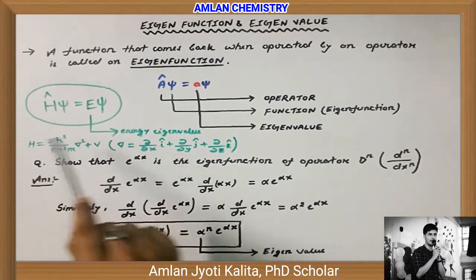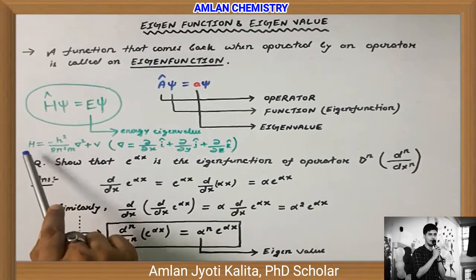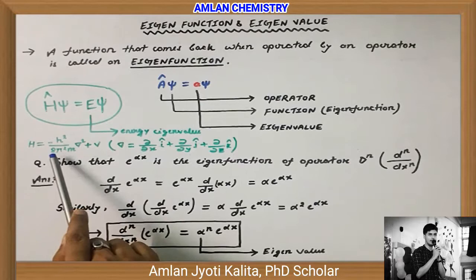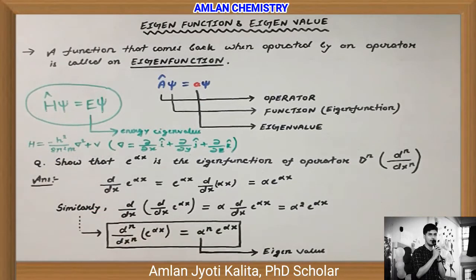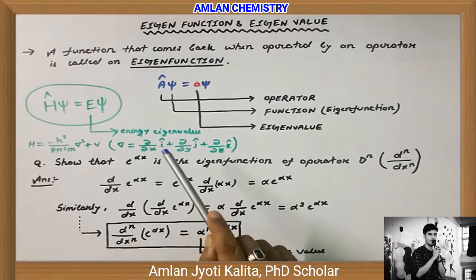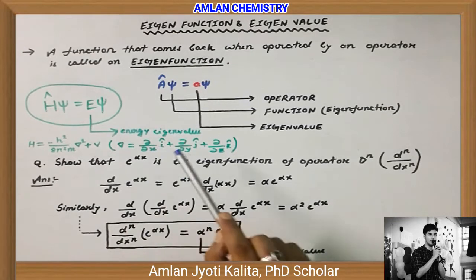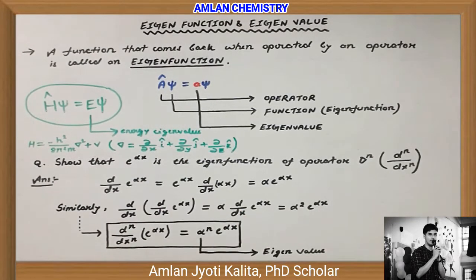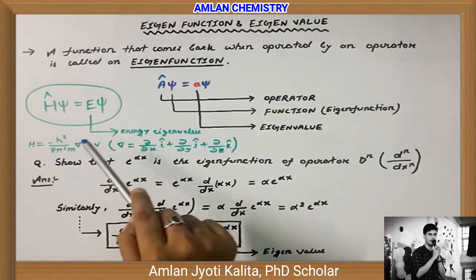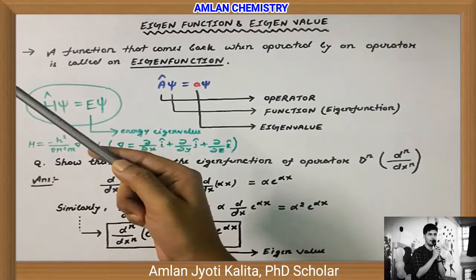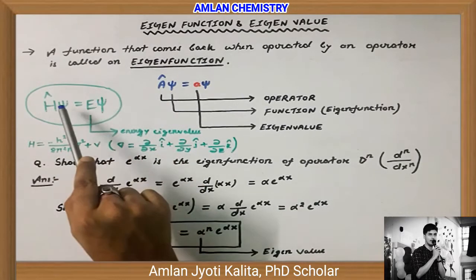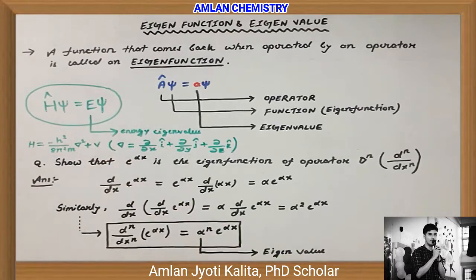Yeh jo wave function hai, iske upar haamne Hamiltonian operator apply kiya hai. Operator ko represent karne ke liye cap use karte hain. H-cap actually mein ek total energy operator hai. H = -h²/8π²m × ∇² + V. Yahan jo pehla term hai woh kinetic energy operator hai, aur jo doosra term V hai woh potential energy operator hai. Del (∇) ka matlab hai partial differentiation in x, y, and z directions.